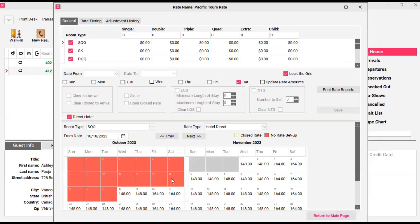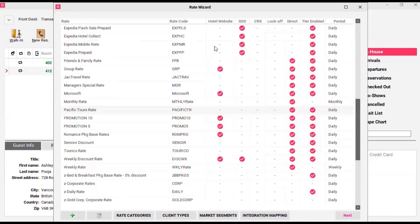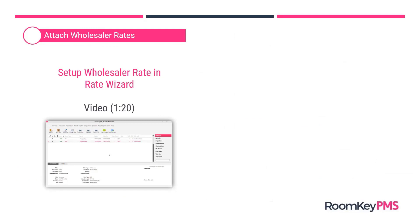When you save those changes and return to the main page, you'll see that this rate plan is now tier enabled. Clicking next will show those discounted rates appearing in the lower half of the screen. The key feature is making sure you attach the wholesaler client type to the wholesaler rate created in the rate wizard, and managing the rate — either tier enabled discounted off the best available rate, or loaded with rate prices as you would a normal rate.